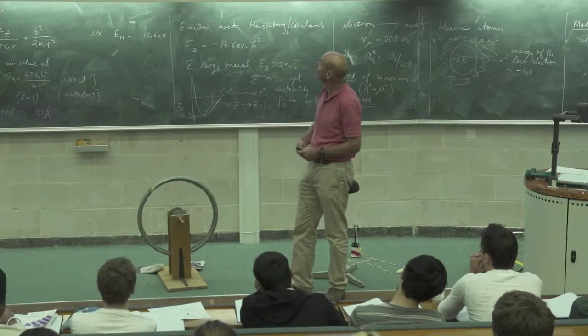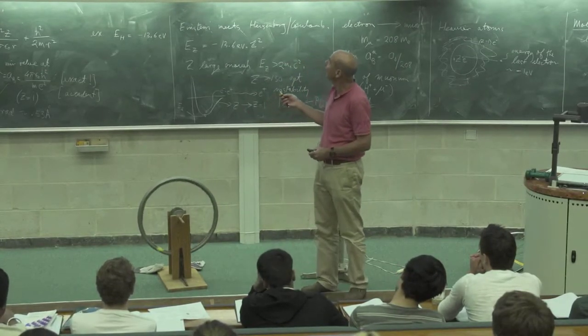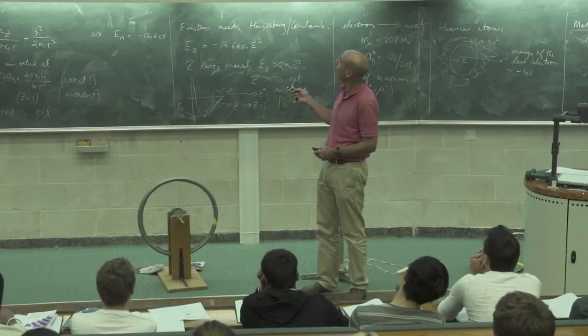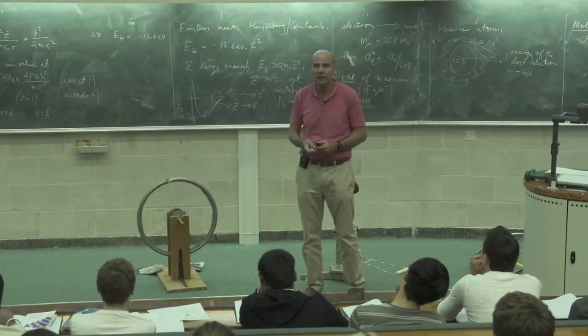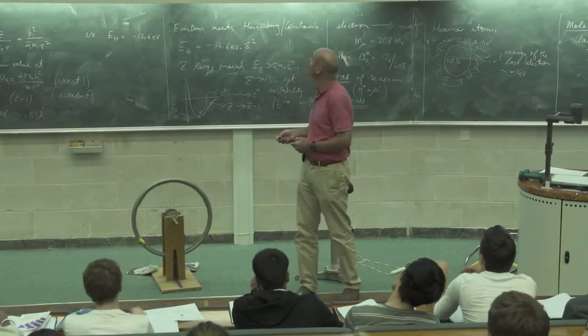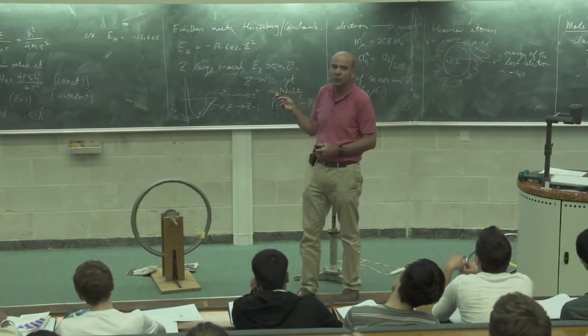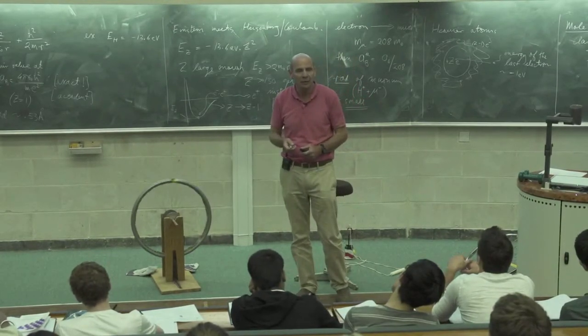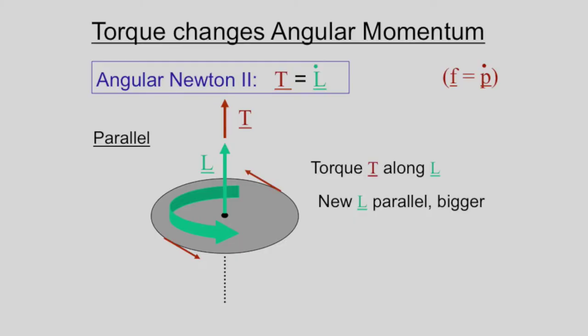And here's a nice simple example of Newton's second angular law, which is the torque is the rate of change of angular momentum. Do you remember we had before F equals dP by dt? Here we have T, the torque, is equal to the rate of change of angular momentum with time. So the dot is d by dt.